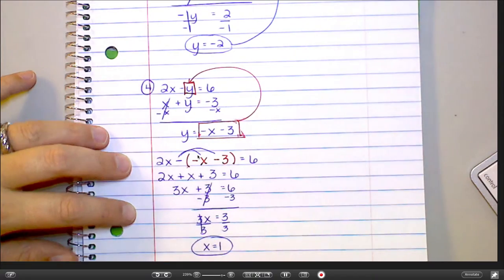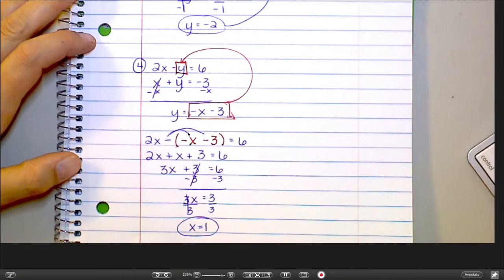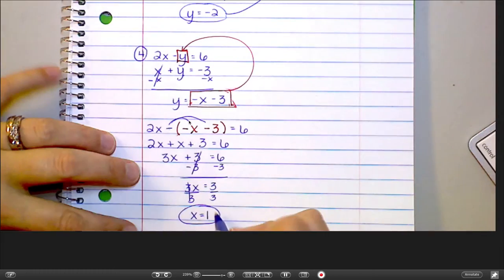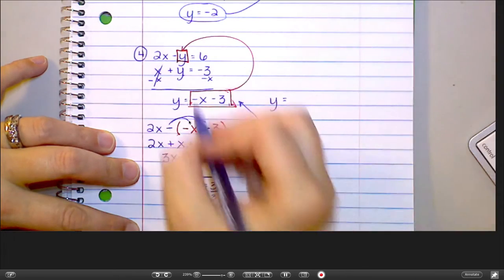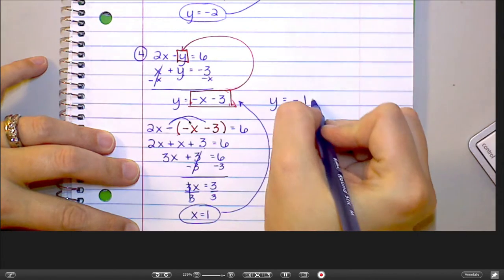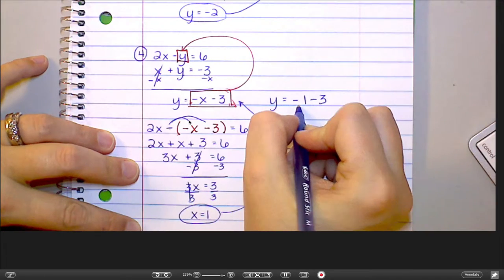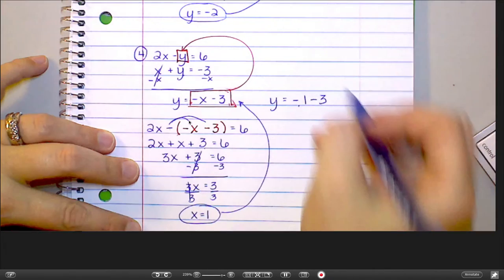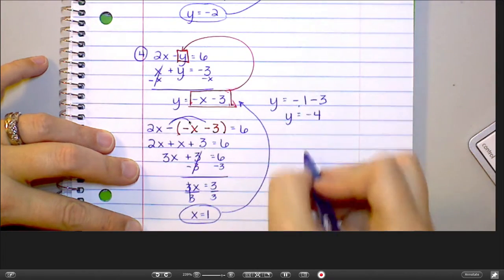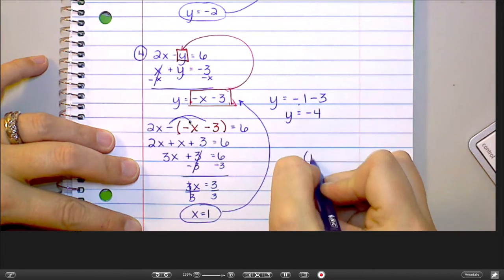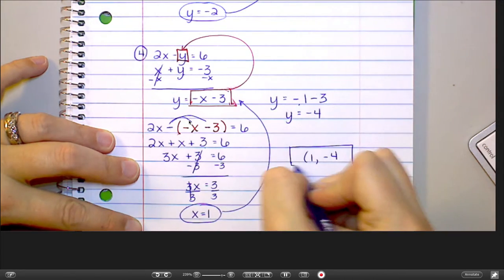Now where would I plug that back in? To the y. I'd plug it in where you have y equals. So that would be right here. And so now I have y equals negative 1 minus 3. Everyone understand why I made that a negative 1? Because there was a negative part of the equation. So negative 1 minus 3 is negative 4. And so then your final answer would be 1 comma negative 4.